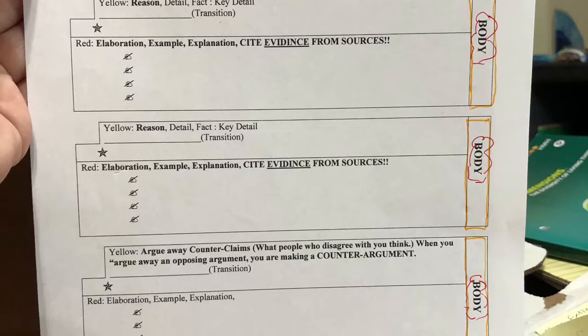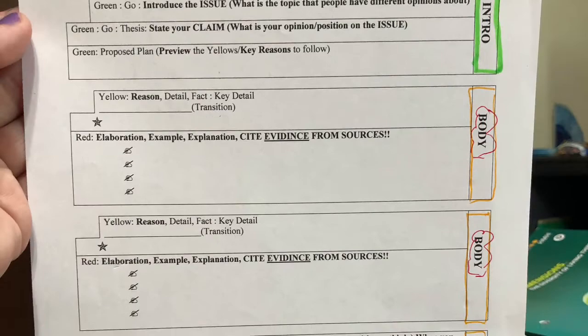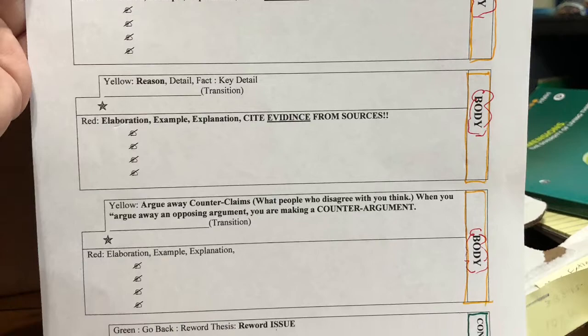When you're going to outline an argumentative essay, you want to keep in mind that it should be five paragraphs for eighth grade. We're going to start with our introduction, three body paragraphs, and one of those is going to be our counter argument and our conclusion.